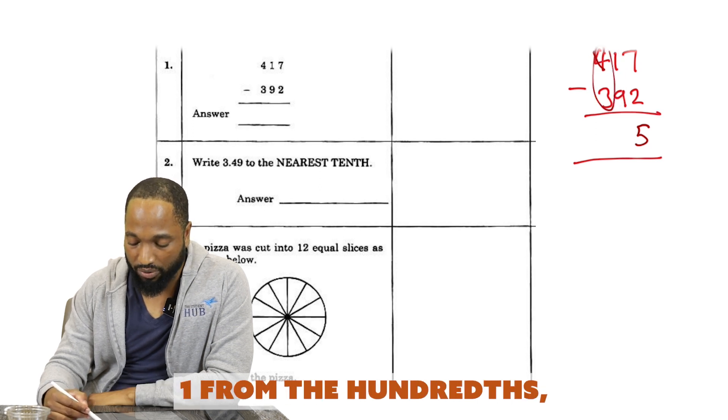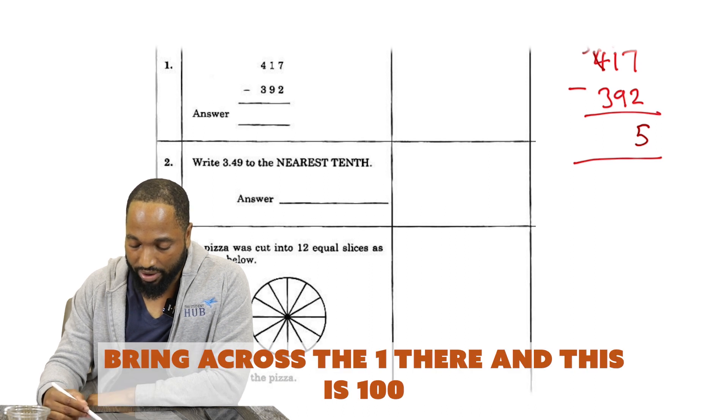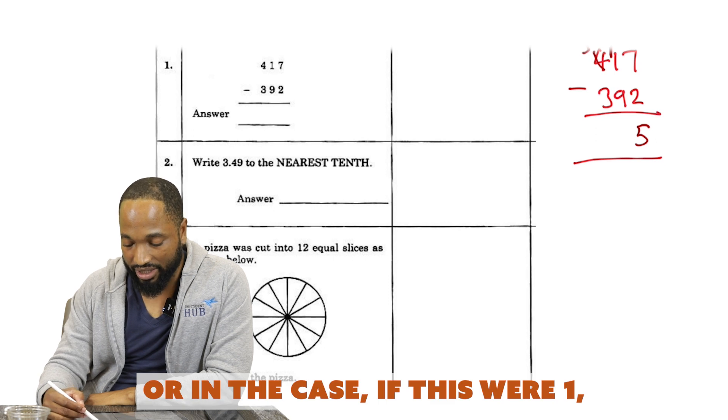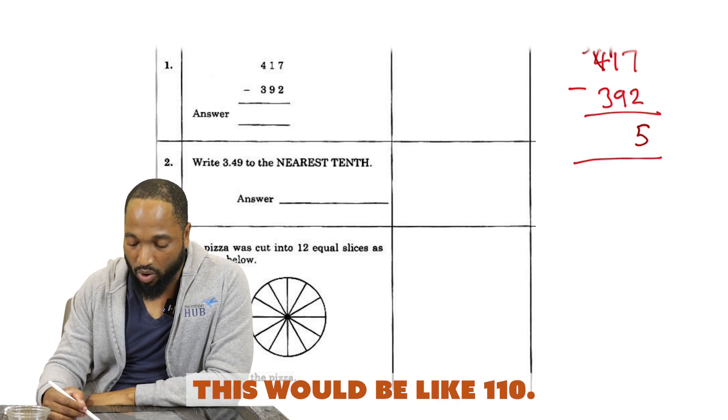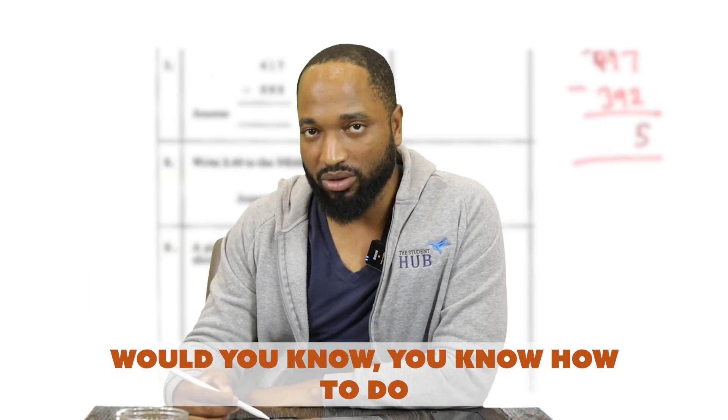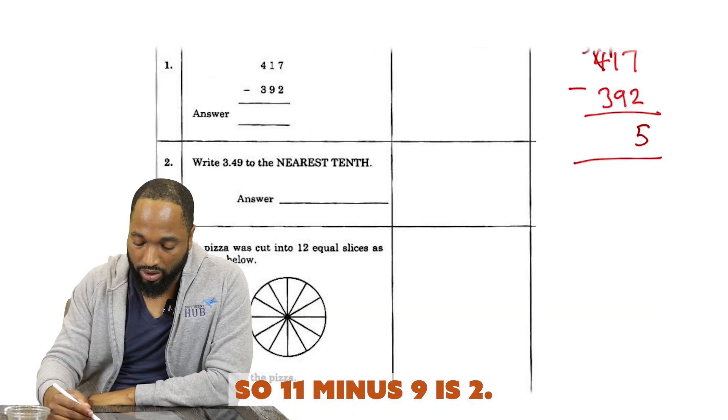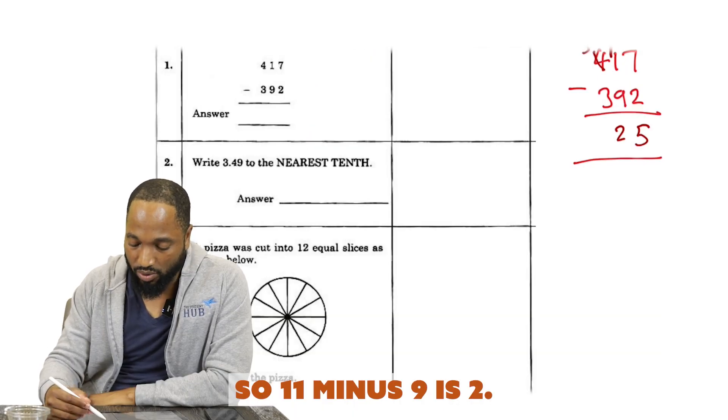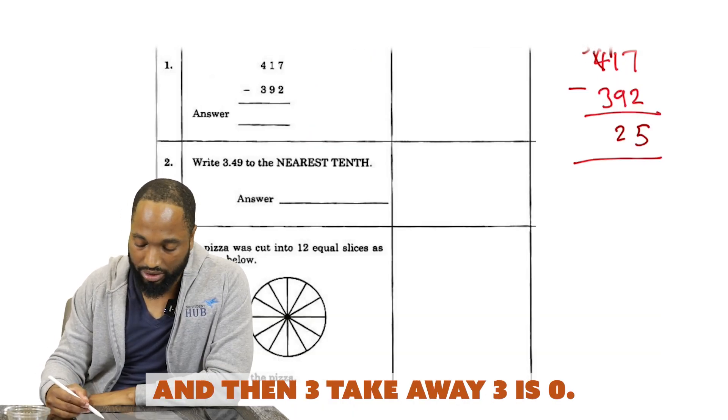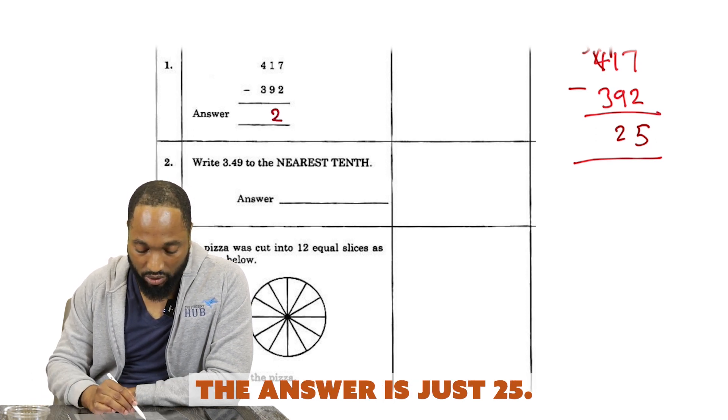When we encounter something like this, we take from the following place value which is a multiple of 10 higher. We're in the tens, we're going to borrow from the hundreds. So it's going to be like three, bring across the one there, and this is 100. We can visualize this as 11 minus 9, which is 2, and then 3 take away 3 is 0. So the answer is just 25.